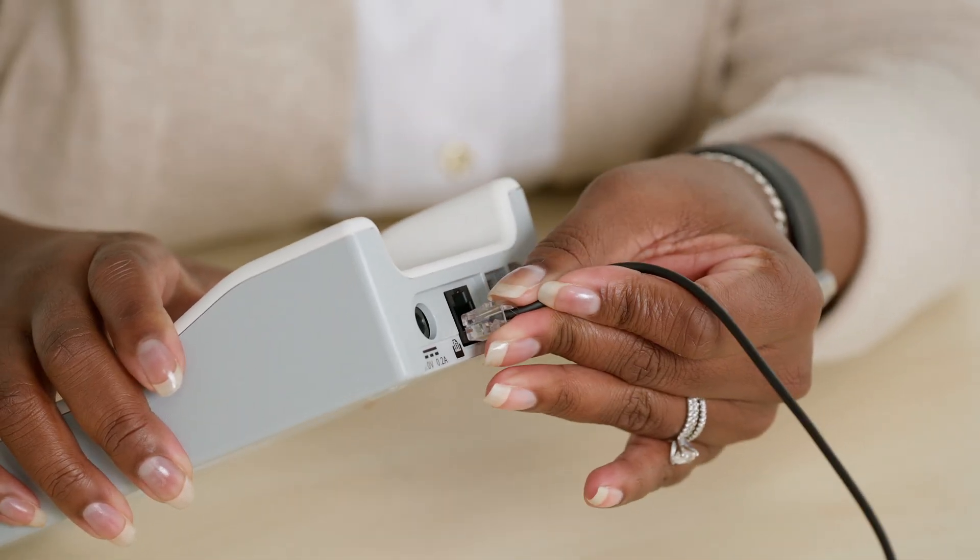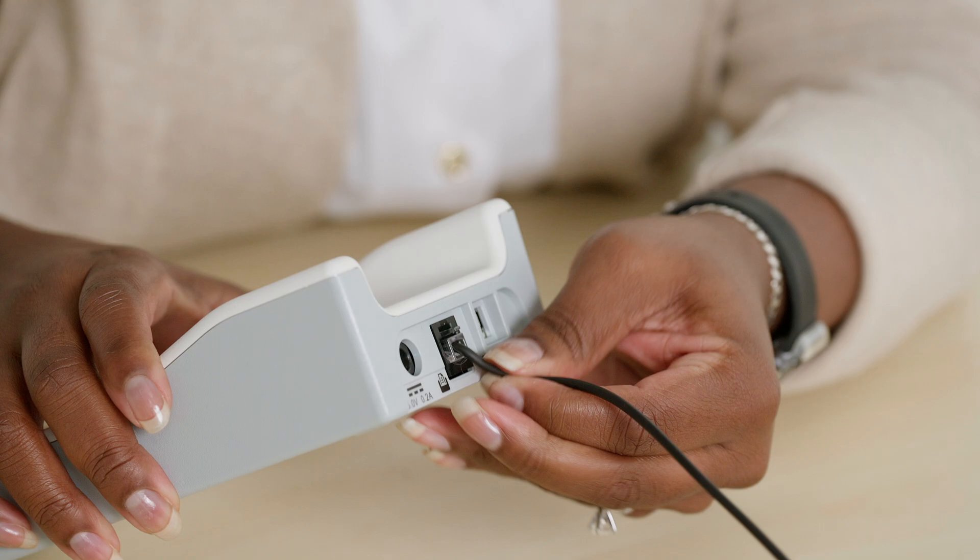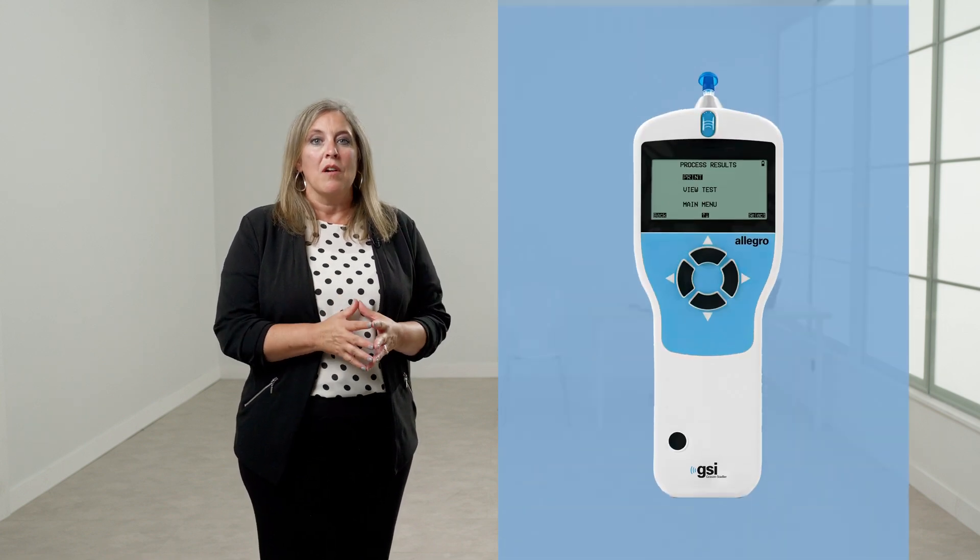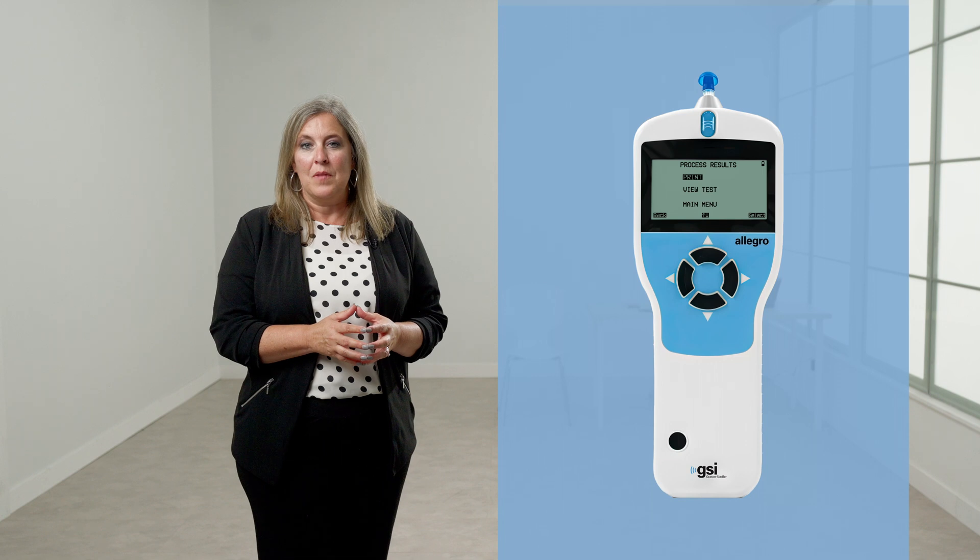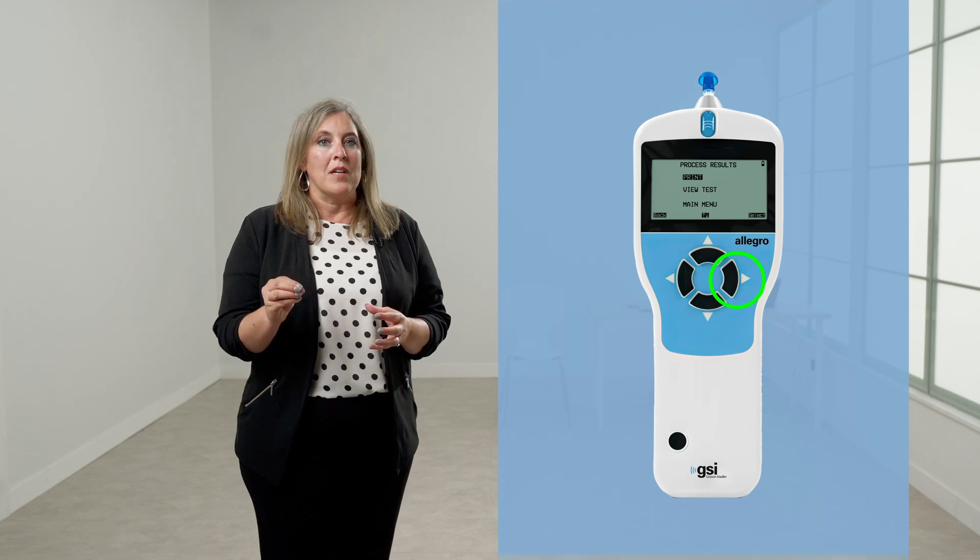Before attempting to print, ensure that the printer is fully charged, switched on, loaded with paper, and physically connected to the cradle with the printer serial cable. Place the Allegro into the cradle when you are ready to print. To print results of the last test performed, select Send to Printer from the Process Results menu. Press the right button when prompted on the screen.